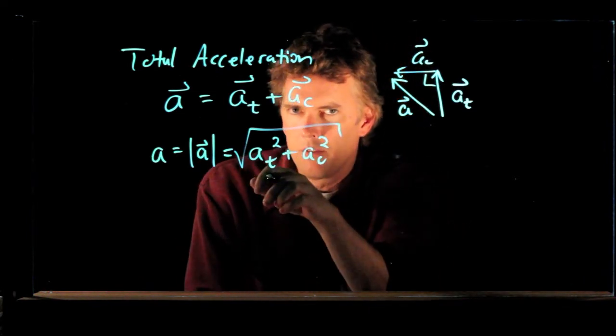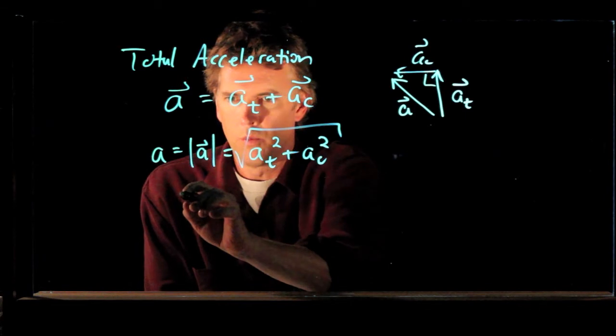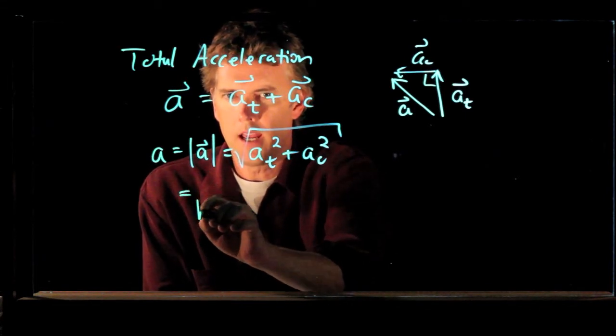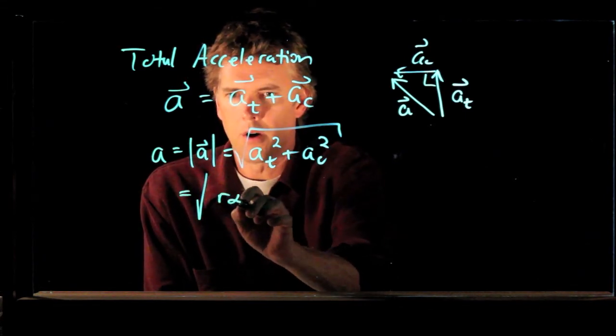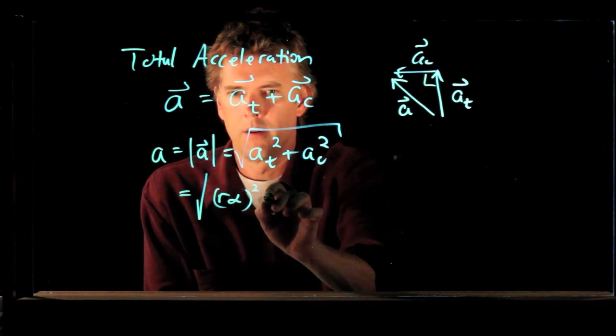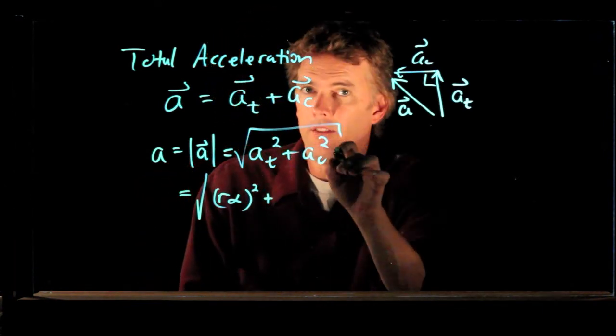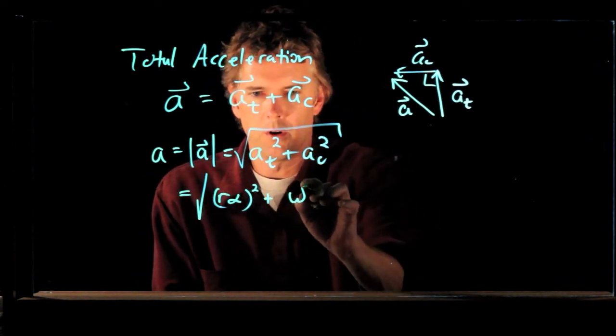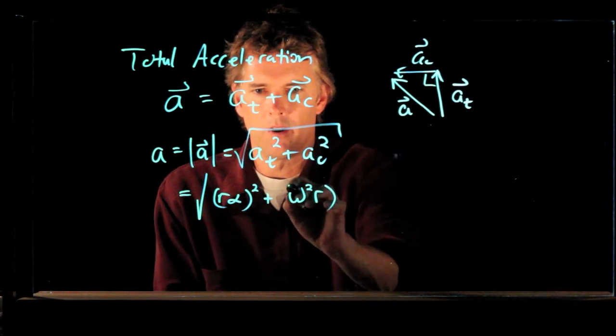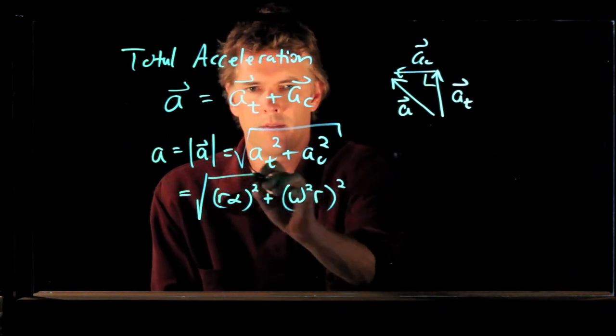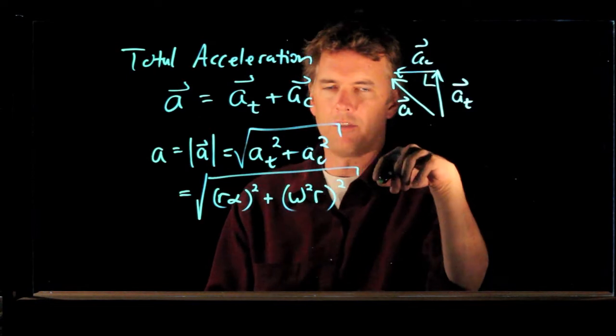But we know what those things are, right? We know that a t is equal to r alpha. And we know that a c is equal to omega squared times r.